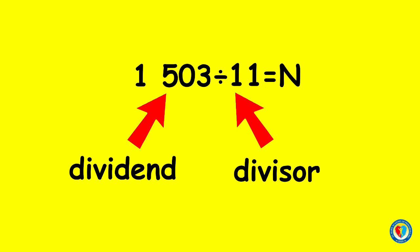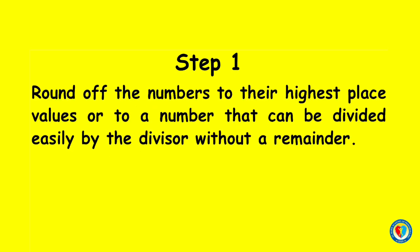To estimate the quotient, follow these steps. Step 1: Round off the numbers to their highest place values or to a number that can be divided easily by the divisor without remainder. Let me teach you rounding numbers to the nearest thousand.